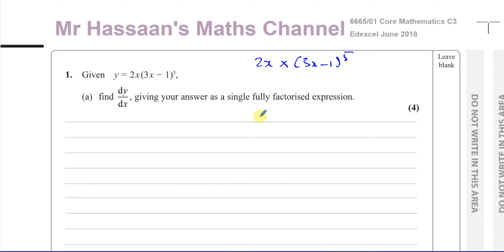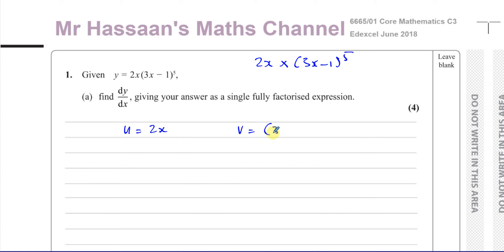We have to use what's called the product rule in order to differentiate a product of two separate things. When you have a function inside a function, you use the chain rule, which we'll have to do for this. So when you use the product rule, one of the products is 2x and the other product is (3x minus 1) to the power of 5.